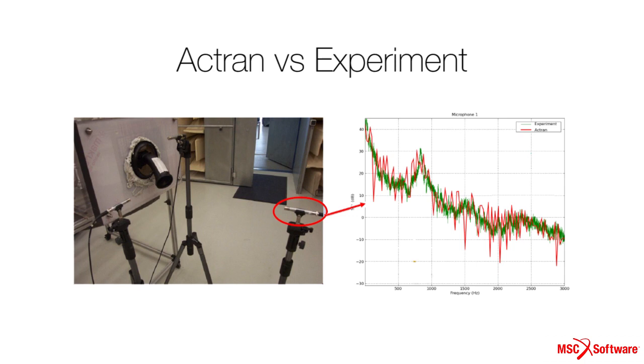The ACTRAN results correlated well with the experimental data, as shown in this graph. Actual microphone measurements are in green. ACTRAN virtual microphone results are shown in red.